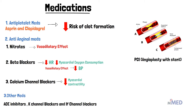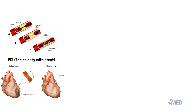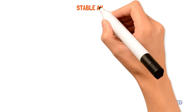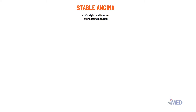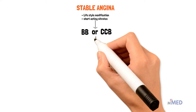If these medications don't work, then we have to go for more invasive management methods like angioplasty with a stent, also known as PCI, and coronary artery bypass graft. According to the National Institute for Health and Care Excellence, we can follow this basic algorithm in the management of stable angina. First, we can start by lifestyle modification and providing short-acting nitrates to the patient.